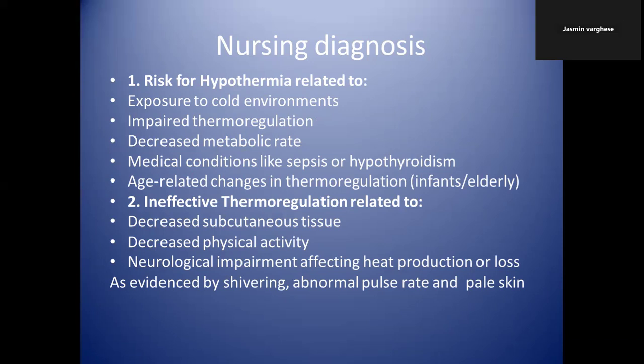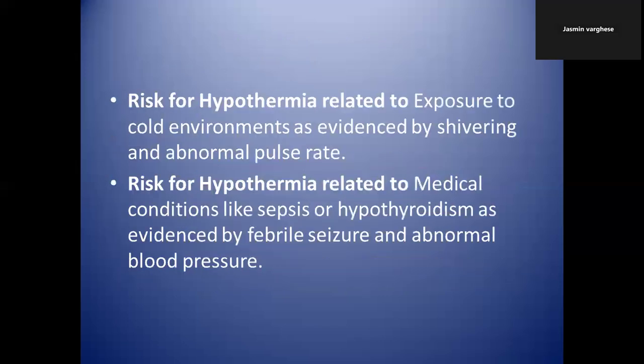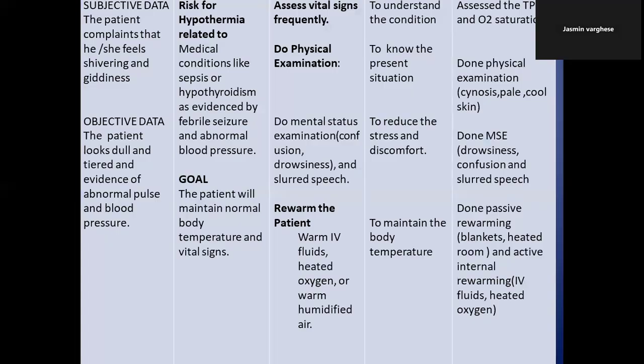You can also write the nursing diagnosis as ineffective thermoregulation related to decreased subcutaneous tissues or decreased physical activity. You must also add 'as evidenced by' the symptoms. For example: risk for hypothermia related to exposure to cold environment as evidenced by shivering and abnormal pulse rate. Another example: risk for hypothermia related to medical conditions like sepsis or hypothyroidism as evidenced by febrile seizures and abnormal blood pressure. Write only the specific condition relevant to your patient — don't write all disease conditions in one nursing diagnosis.